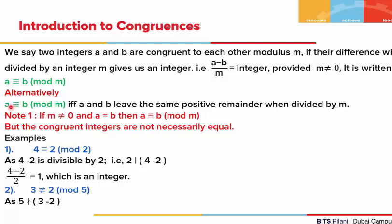Alternatively, we say that a is congruent to b mod of m if and only if a and b give us the same remainder when they are divided by m.